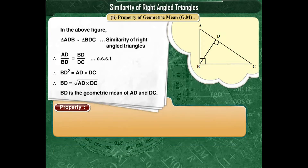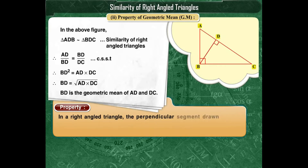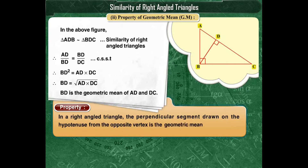The property of geometric mean states that in a right-angled triangle, the perpendicular segment drawn on the hypotenuse from the opposite vertex is the geometric mean of the segments into which the hypotenuse is divided.